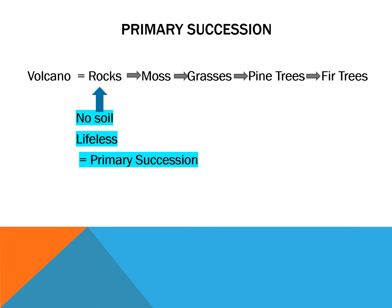After a volcano erupts it's just rock, and you get this progression: maybe some moss moves in. It can break up the soil — it may take decades — just enough so now some grasses can grow. The grasses add things to the soil, making it better for pine trees and so on. But the starting point is this rocky, lifeless beginning.